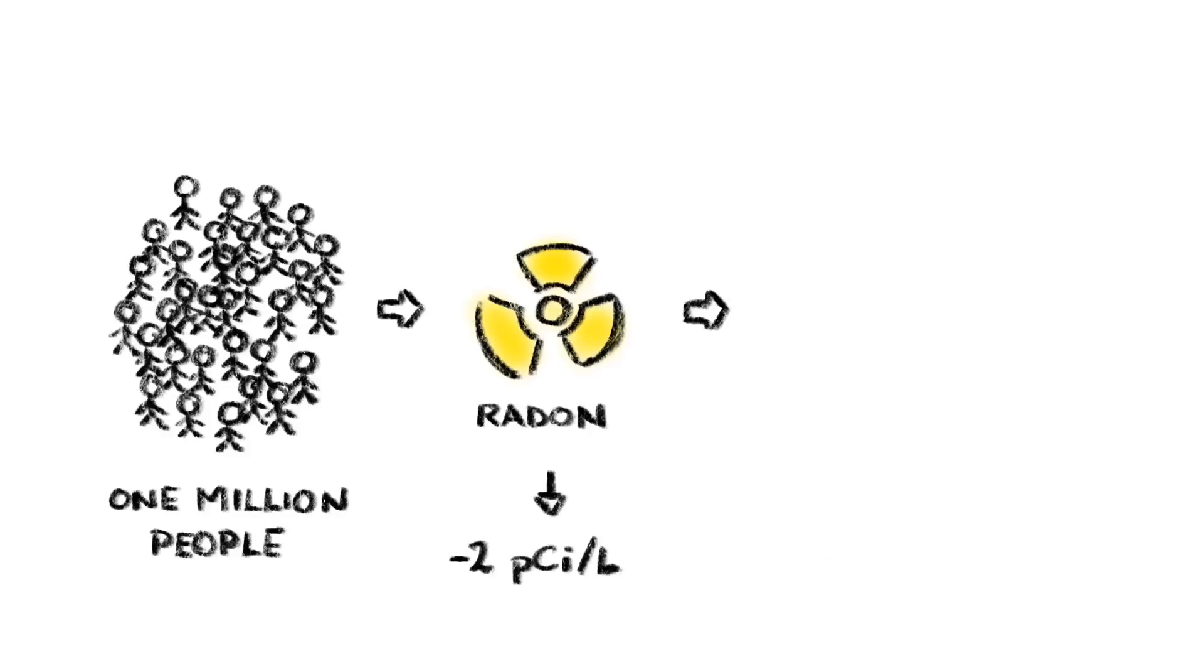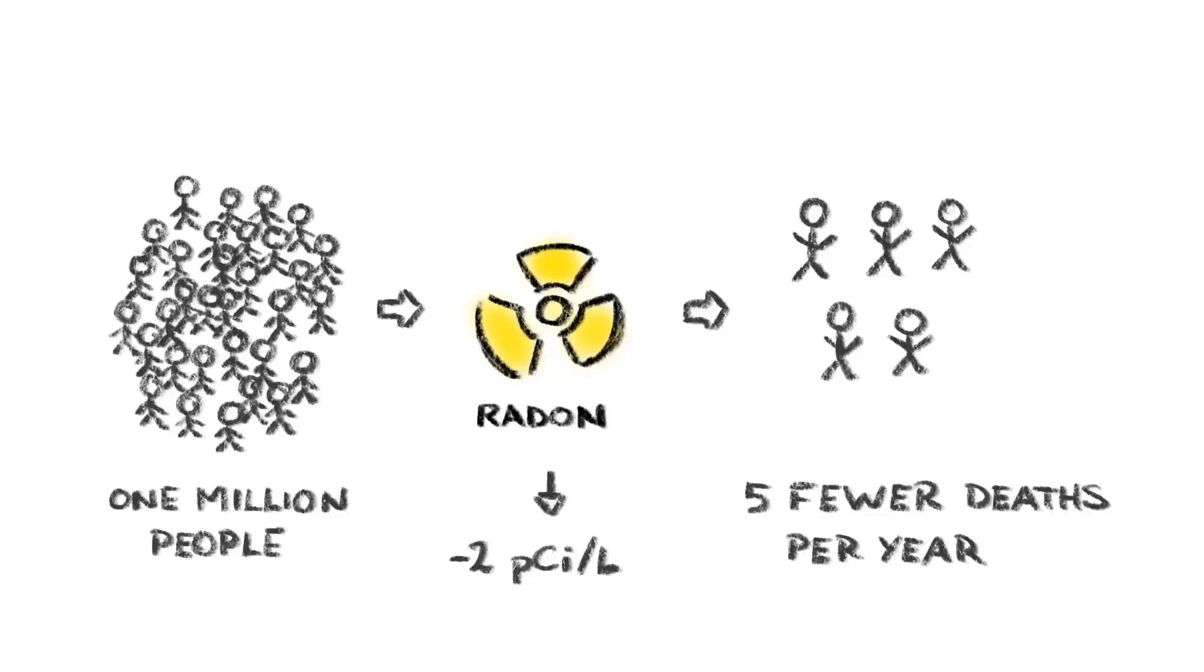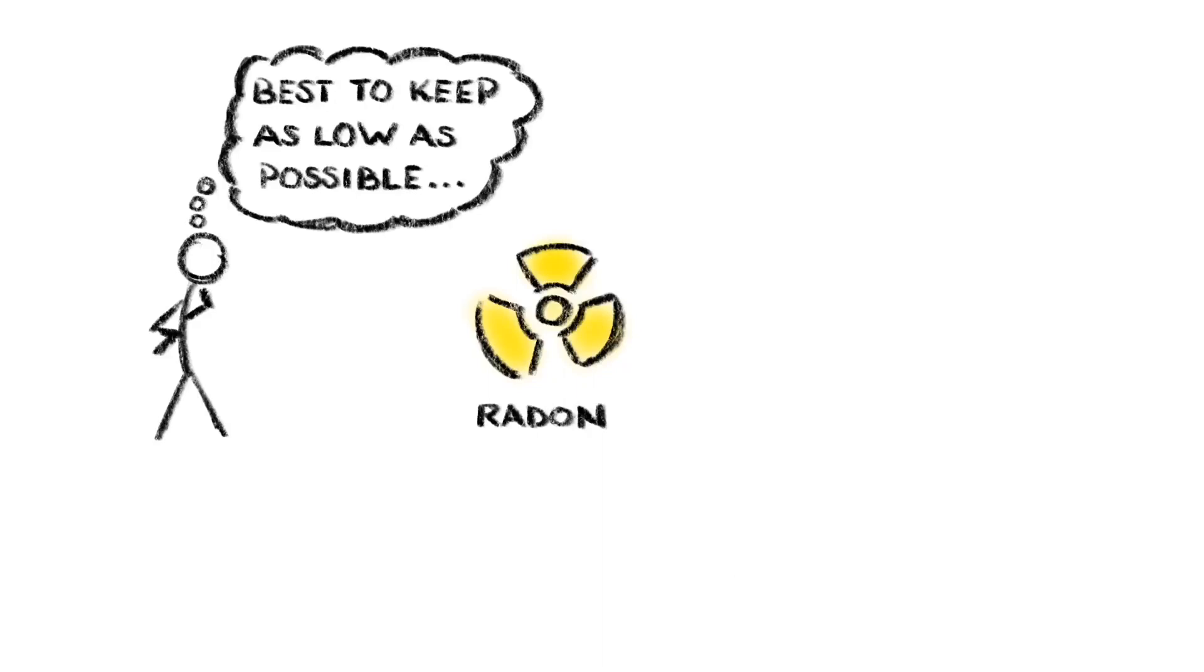Likewise, if we reduced the average exposure level by 2 picocuries per liter, there'd be 5 fewer radon-related deaths per million people each year on average. In other words, small increases and decreases in exposure do make something of a difference. And this is why it's important to keep your radon exposure as low as you can possibly get it.